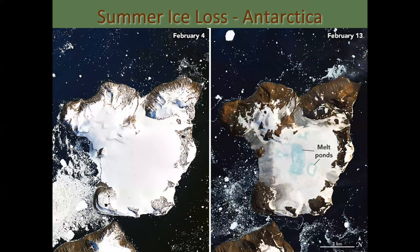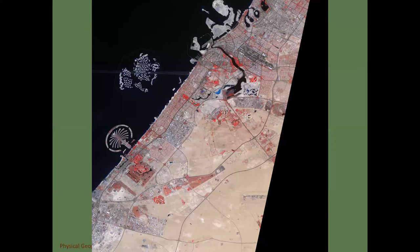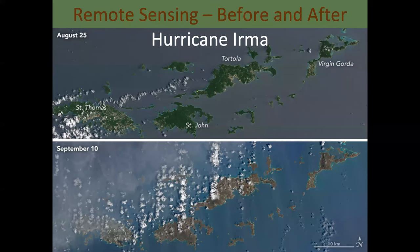Here's the idea of loss of ice in Antarctica — you can use remote sensing images from space to tell what's happening. Remember, February is summer in Antarctica, not winter. Here is the city of Dubai from space — you can see urban usage and development. And here's Hurricane Irma in 2017: what those islands looked like before the hurricane and after, like somebody mowed them down.